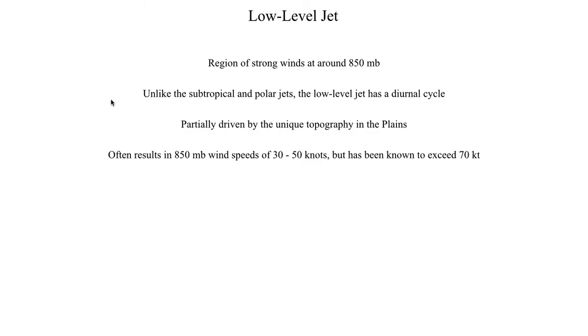As seen in the previous map, the low-level jet had winds of 30 to 50 knots. But on occasion, the low-level jet can reach 60 or 70 knots — sometimes even higher than that. Typically, the more intense the low-level jet, the more substantial the severe weather risk you might be dealing with.